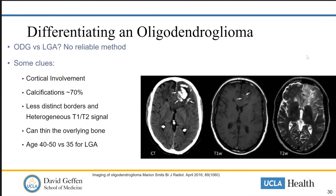Some of the distinguishing imaging features include cortical involvement, calcifications, and less distinct borders. Oligodendrogliomas tend to be cortically based and can occasionally thin the overlying bone. The age range may also differ for oligodendrogliomas versus low-grade astrocytomas. But none of these are 100% reliable, so we're often faced with what we think is a primary glial tumor and, if we're going in there, we're generally thinking about how to remove it completely regardless of what it ultimately turns out to be.